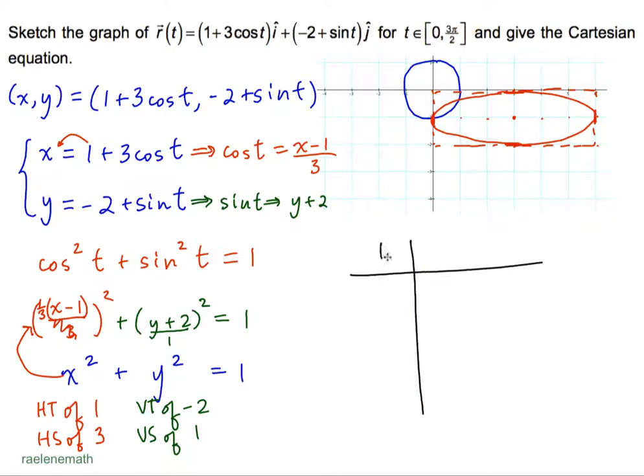And we have a specific time frame here of 0 to 3π/2, so we can set up our table of values for time, which is still an angle, whether we call it t or theta. And we might want an intermediate point, so that we can be very clear on the direction of travel. So, if we substitute 0 into the x-coordinate, cos(0) = 1 × 3 = 3, plus 1 is 4. Meanwhile, sin(0) = 0, plus -2 is -2. And the point (4, -2) is not on the graph.